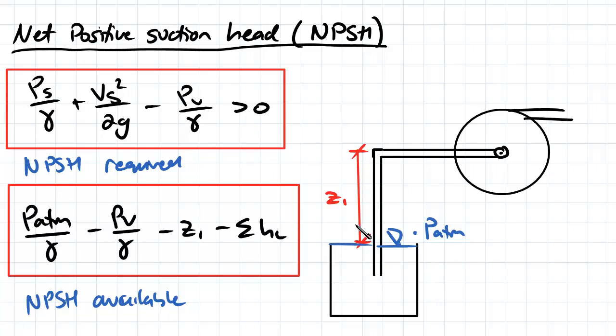To do that, we ensure this equation is greater than zero: atmospheric pressure divided by unit weight, minus vapor pressure divided by unit weight, minus z1, which is the distance from the pump to the free surface, minus the head losses within the system and pump.